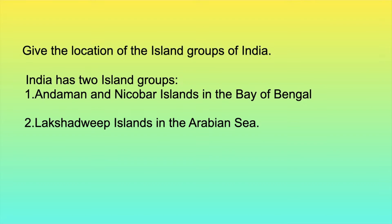Give the location of the island groups of India. India has two island groups: Andaman and Nicobar Islands in the Bay of Bengal, and Lakshadweep Islands in the Arabian Sea.